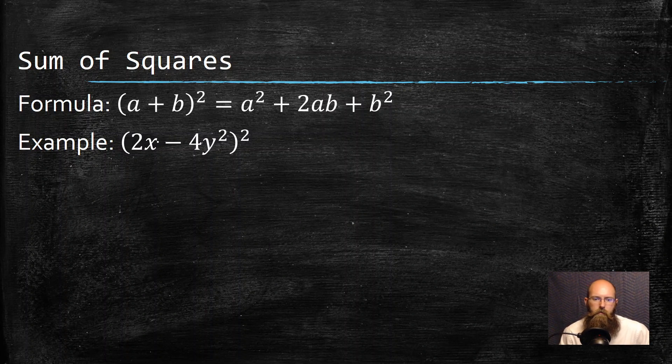I actually wrote it for you differently. 2x - 4y² all squared. Well, it's important for you to remember that just means that's (2x - 4y²)(2x - 4y²). And again, you can distribute all this out, combine like terms, do all of that.